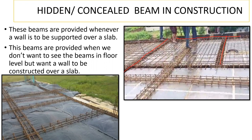There is also one beam somewhere here, and one more beam here, and another one over here as well. These beams are called hidden beams or concealed beams.